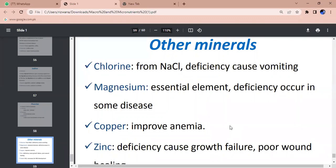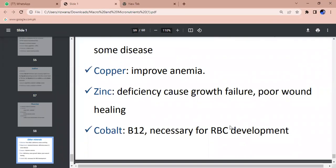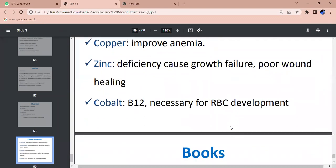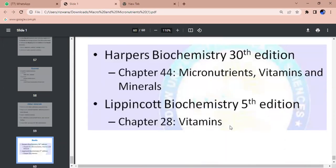Magnesium element - we give in cardiac diseases. Magnesium improves cardiac function. Copper can cause anemia or prevent anemia. Zinc deficiency affects wound healing. Cobalt - vitamin B12 is necessary for RBC development.